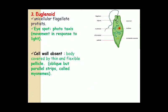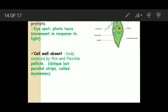Now another group of plant-like protists includes euglenoids. Euglenoids are basically unicellular flagellate protists. They possess flagella. And they possess a characteristic eye spot. This eye spot helps in phototaxis, that means movement in response to light. It helps the euglenoids to move in response to the stimulus of light.